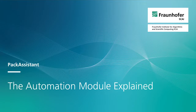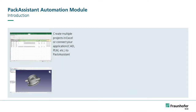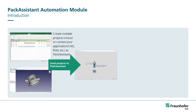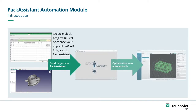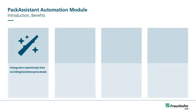The Pack Assistant API is an additional module for the automation of Pack Assistant. Pack Assistant accepts data from other programs via a new interface so that projects can be created and their optimization started in an automated manner. This facilitates a more effective integration into the company's business processes and results in a faster workflow.